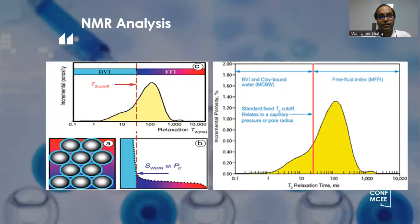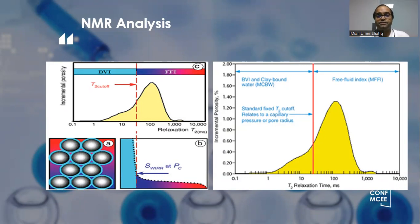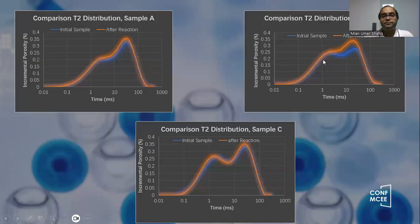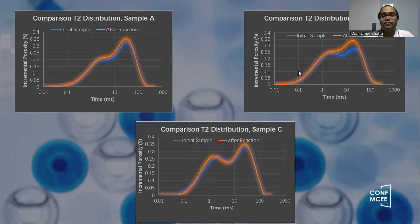Then we move towards the NMR analysis. NMR analysis is nuclear magnetic resonance analysis, in which we find the FFI and BVI. FFI is the free fluid index, meaning the pore spaces in which fluids are free to move, which are large pore spaces. BVI is bulk volume irreducible, where the pore size is small and the fluid is not allowed to move — the small pore spaces. Looking at the results here, the orange line represents the curve after reaction and the blue line shows the curve before the reaction. In the case of the sample, you can see a clear difference between the blue and the orange, meaning the permeability has been increased by the chelating agents.